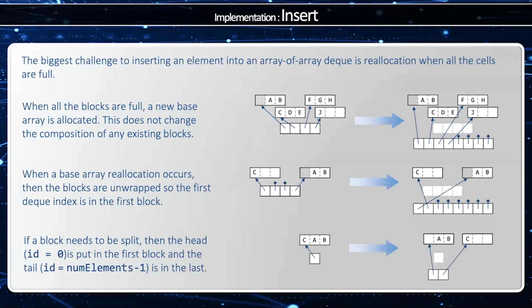And the final example here is if a block needs to be split. Now deque index 0 is A, and then B, then C. And so I need to, in this case, move them into separate blocks. And this is one of the few times that we actually have to move an element when we have to reallocate. Most of the time, the blocks stay contiguous. But in this time, I have to split the block because the block itself wraps.